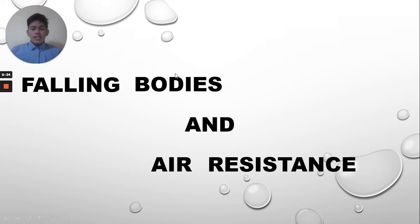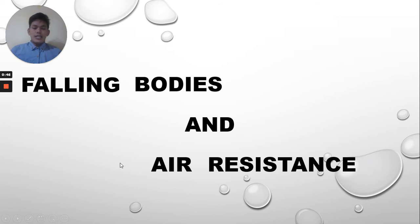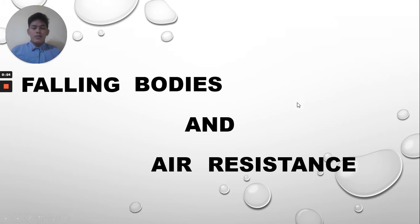Falling bodies refers to any object that is moving downward with the help of gravity and its mass, while air resistance is the force that acts in the opposite direction of an object. Since falling bodies have movement in the downward direction, the air resistance acts in the upward direction.